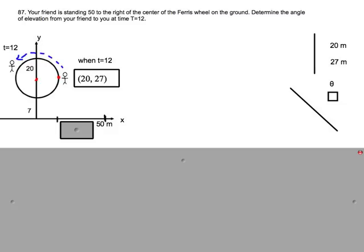You are the little man in the Ferris wheel at (20, 27). So first you take a diagonal line and connect it to the little man on the Ferris wheel and the friend at (50, 0).